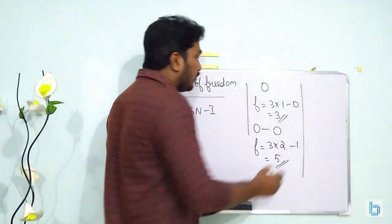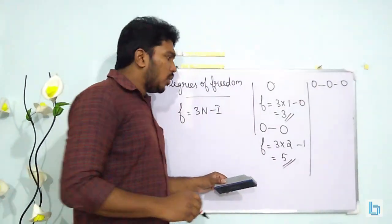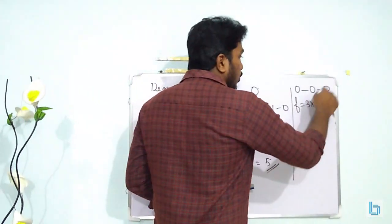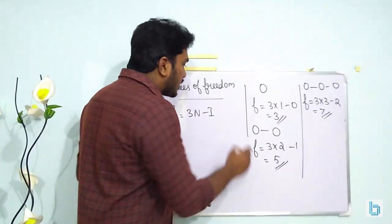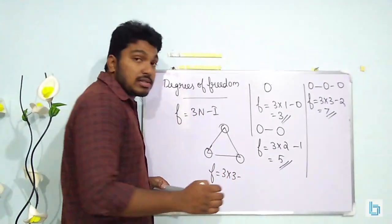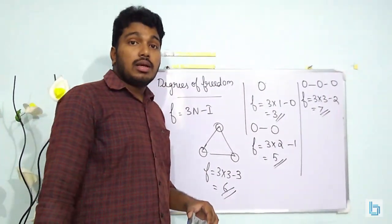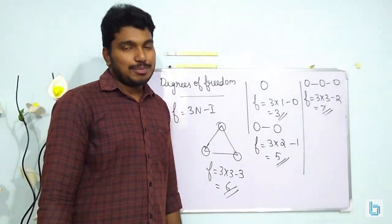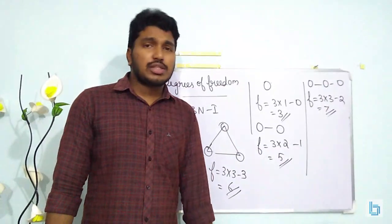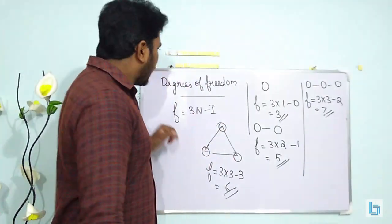For a linear triatomic molecule: F = 3×3 − 2 = 7. For a non-linear triatomic molecule: F = 3×3 − 3 = 6, with 3 translational and 3 rotational degrees of freedom. Also remember that vibrational modes have two types: kinetic and potential. That covers degrees of freedom.